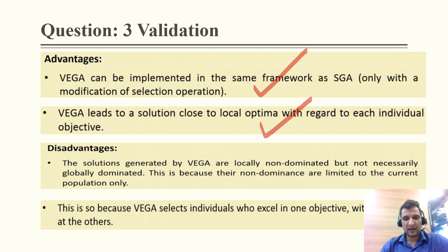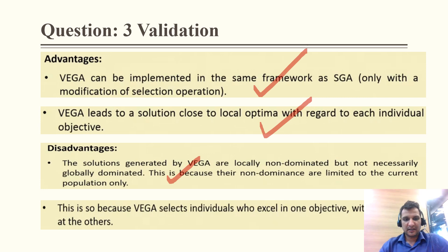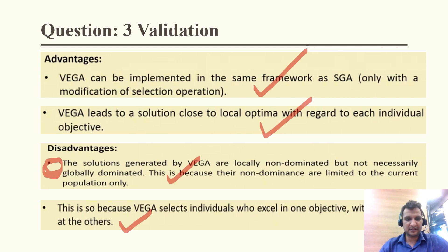The solutions generated by VEGA are locally non-dominated but not necessarily globally dominated — therefore this is the correct statement. In the given question, the wording is slightly changed. Since VEGA selects individuals who excel in one objective function over others, this statement has a little modification that makes it incorrect as stated.